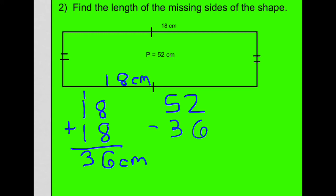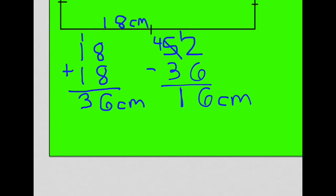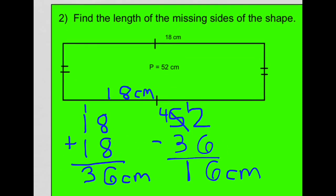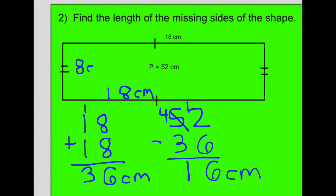So 52 minus 36. We'll do a little subtraction here. We're going to have to borrow that 5 becomes 4. This becomes 12. 12 minus 6 is 6. 4 minus 3 is 1. So that means each of these two sides, this side and this side are 16 centimeters. We also know that they are exactly the same length. So that means if we take that 16 centimeters and divide it by 2, we'll get 8 centimeters. That means each of these other two sides, this side must be 8 centimeters.